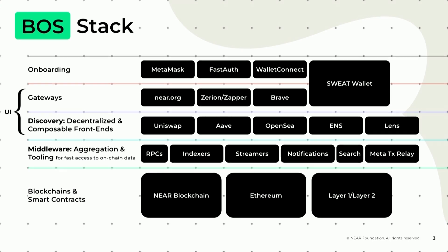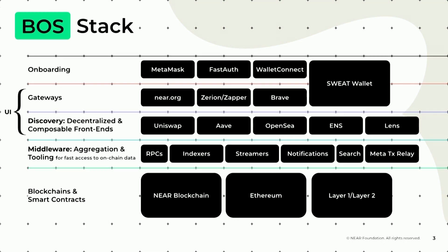Below that, you have what's called a gateway. In BOS, it really means it's an application that's running the specialized virtual machine that powers the BOS technology. Below that, you have what you'll recognize as a bunch of the dApps that most users are aiming to interface with when they're interacting with Web3 — that could be like Uniswap, OpenSea, Lens, the sky is the limit. Below that, you have the data and communication layer with the blockchains — that's RPC, and some layers on top of RPC like an indexer, to make interacting with these applications easier for developers and more performant for users.